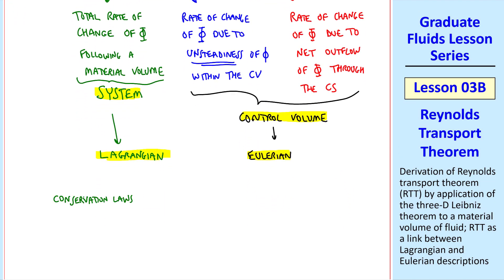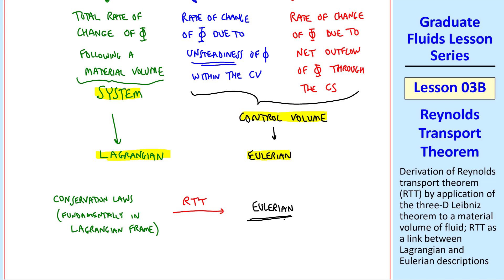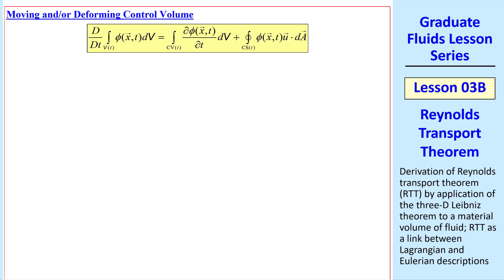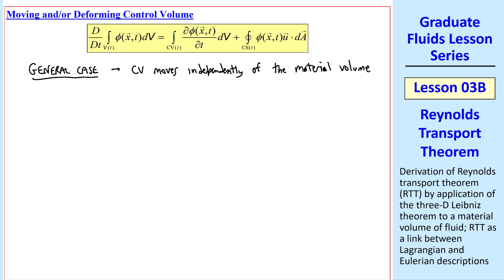What we're able to do then is take conservation laws, which are fundamentally in a Lagrangian frame — for example, conservation of mass of a system — and then use the Reynolds Transport Theorem to transform these into the Eulerian frame of reference. For mass, for example, fluid mass moves with the fluid as a material volume, but in the Eulerian method we can have a fixed control volume with mass flowing in and out. Conservation of mass in the Lagrangian frame is easily changed into the Eulerian frame using the Reynolds Transport Theorem.